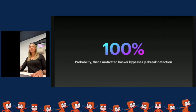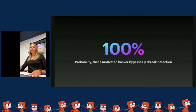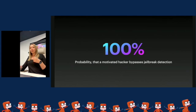100% — that is the probability that a motivated hacker bypasses any jailbreak detection you implement. At the end, there is a rule: a reverse engineer always wins. So here we are protecting against something we can't fully fight. But there are different situations, and as I mentioned, there are several types of apps for which it is highly recommended to at least try to check for a jailbreak.